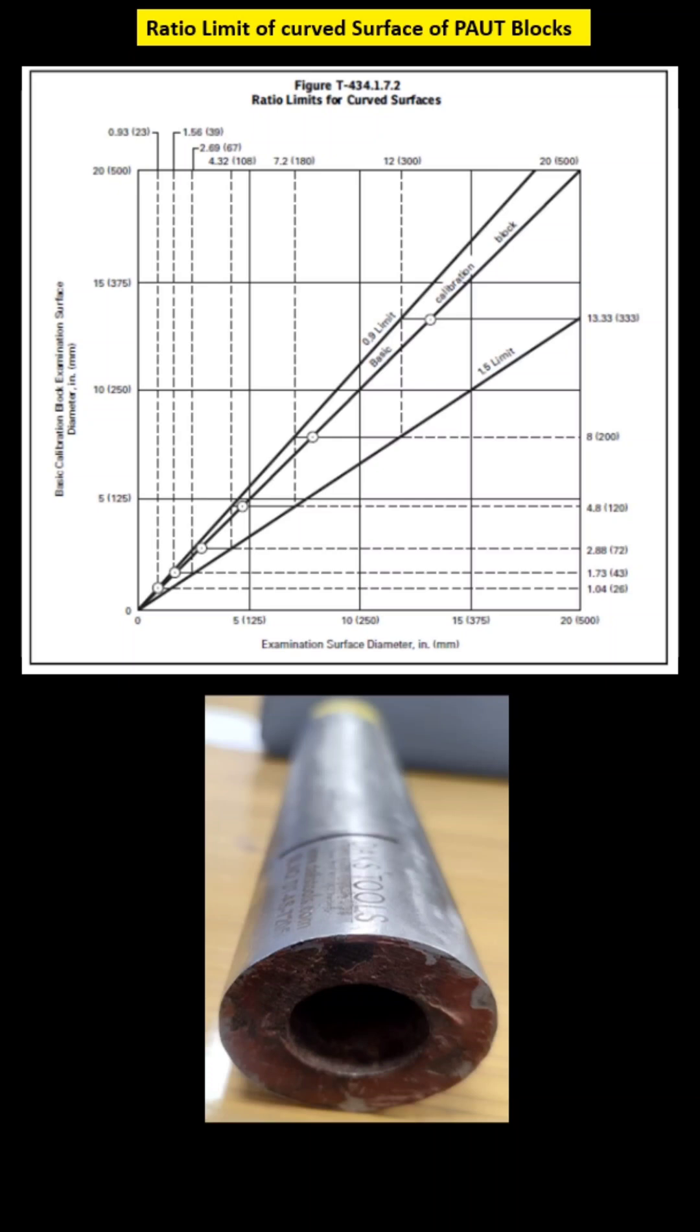We will be discussing the ratio limit of curved surface for PAUT calibration blocks. Generally, in calibration blocks there are two types: piping calibration block and non-piping calibration block.